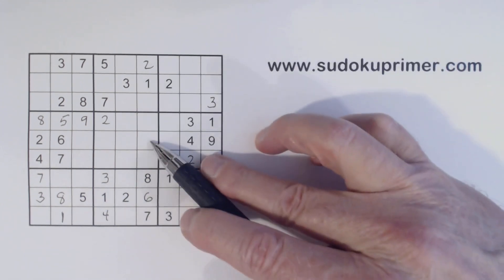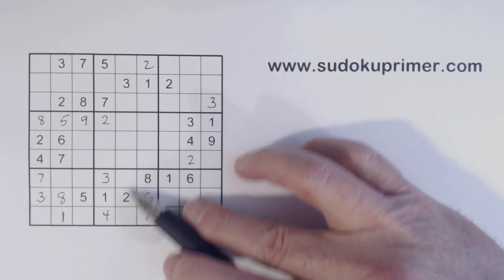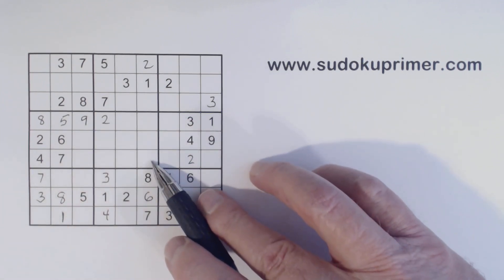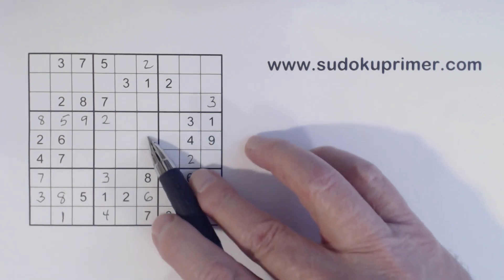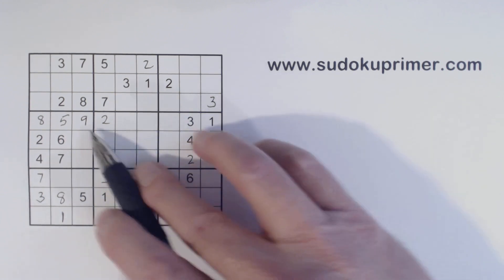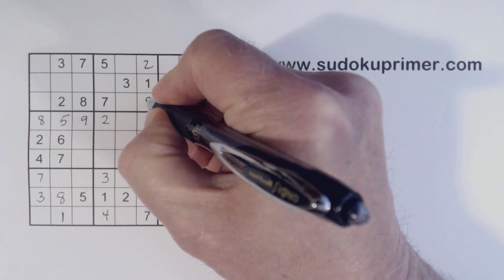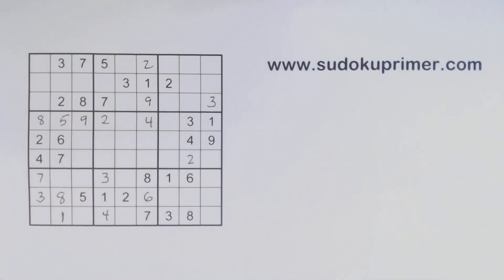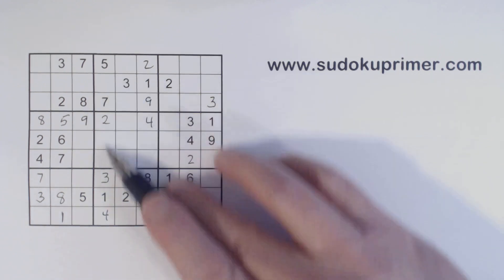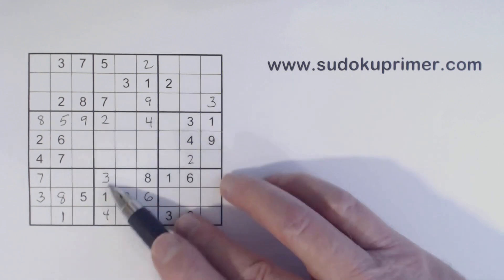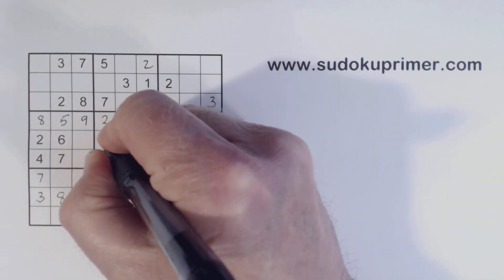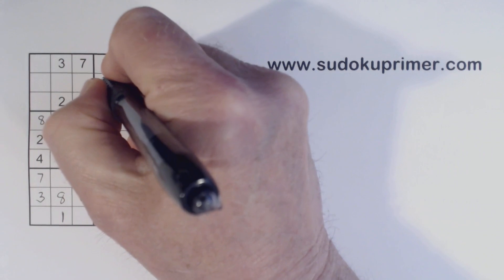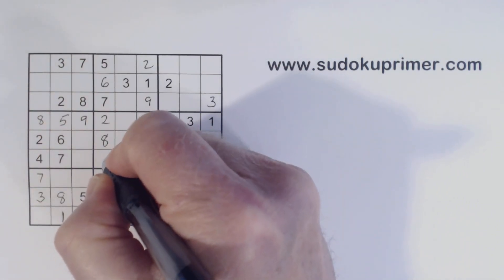Now we have three-five twins here because we've got five-nines right here. We've got a five there, five, and a five there, so one of these is a five. A three, three, and three here so one of these is a three. With these three-five twins we know these are four and nine — we've got a nine there so we can fill those in. Now let's look at column four — what are we missing? One, two, three, four, five, six, eight, and nine. There's a six and a nine, so that's an eight right there. There's a nine there, so we know that's a six and that's a nine right there.